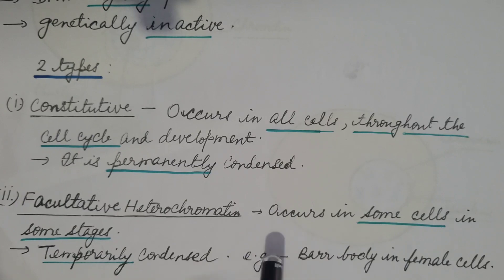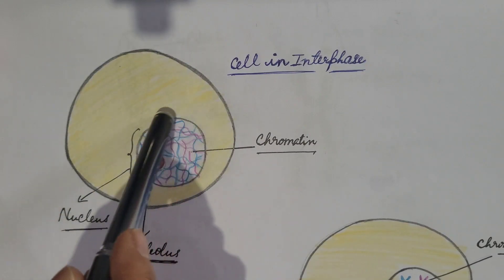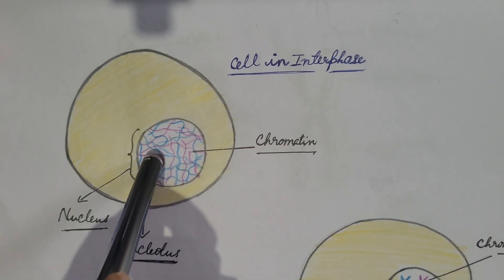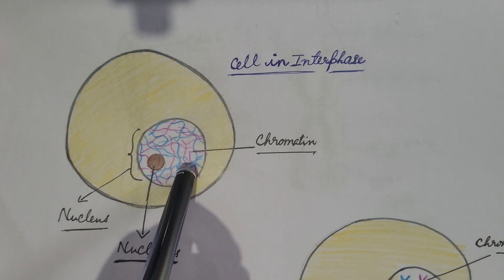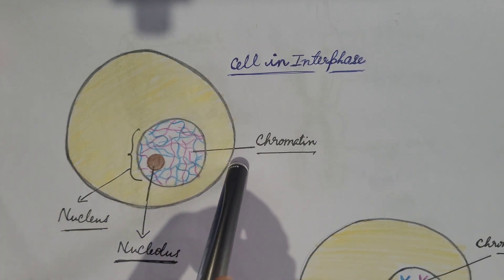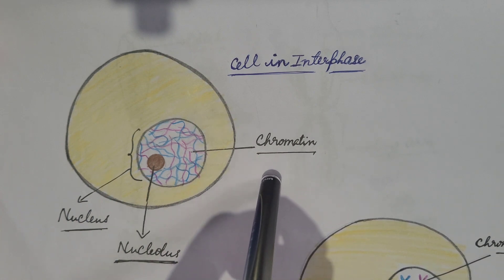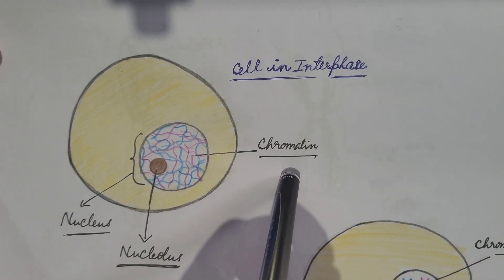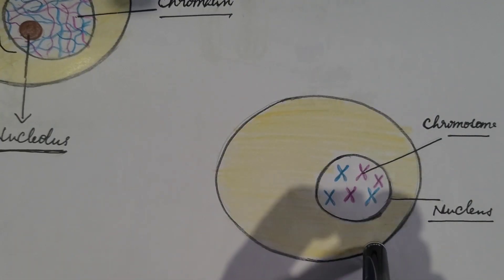An example of facultative heterochromatin is the Barr body in female cells. During interphase, the nucleus contains the nucleolus, and chromatin fibers embedded in the nucleoplasm are long thread-like nucleoproteins made up of DNA and histone proteins.